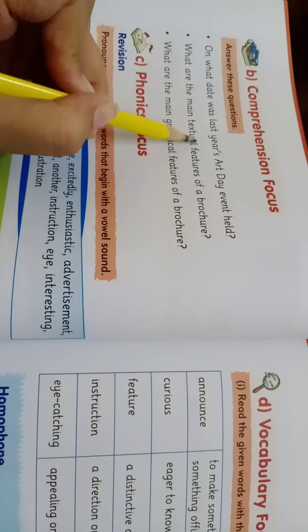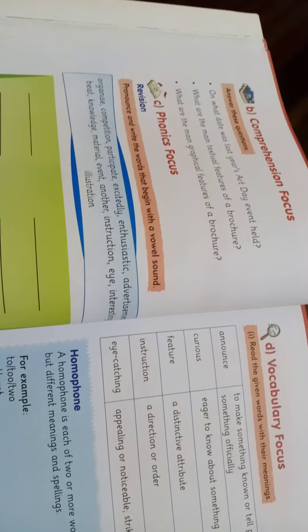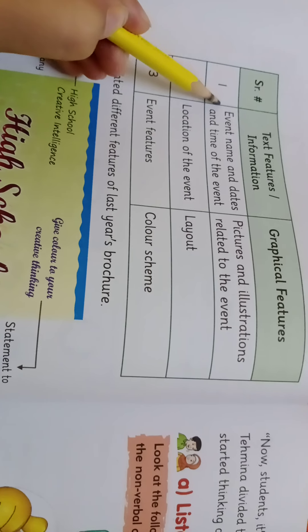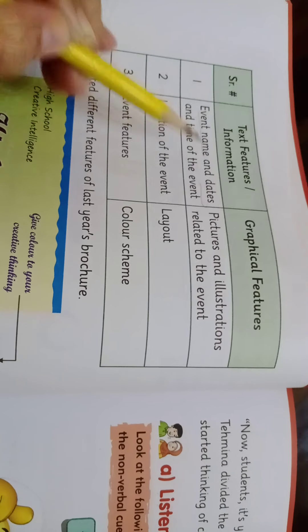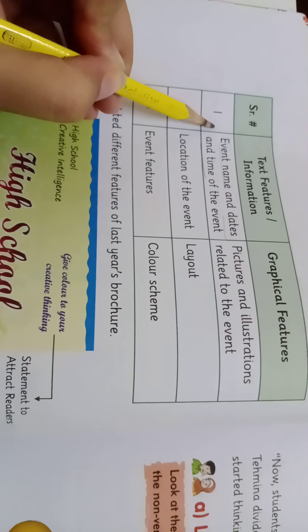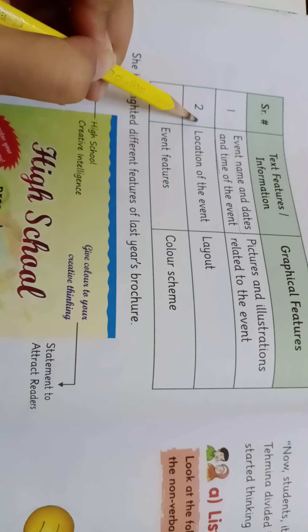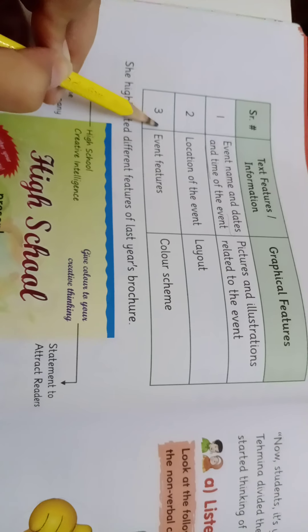The next question is: what are the main textual features of a brochure? The answer includes text features such as information, event name, dates and time of the event — that is, what date and time the event will be held. Also included is the location of the event.